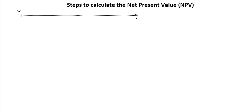Let me show you the cash flows that need to be calculated on a timeline. This is our timeline — year zero, which is today, then year one in the future, year two in the future, and so on through the final year in which the project would end.